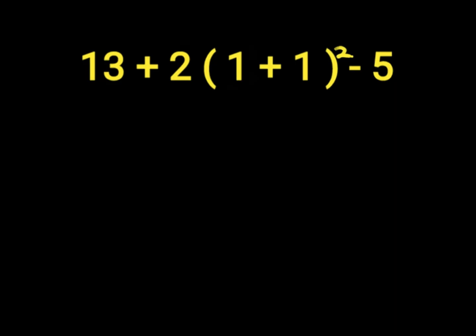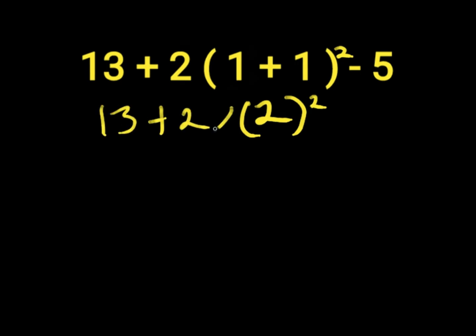First of all, we solve our parentheses which is 1 plus 1. 1 plus 1 will give us 2, then we put it in our exponent which is 2 to the power of 2. Then we have 13 plus 2 times 2 to the power of 2 minus 5.